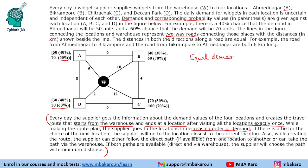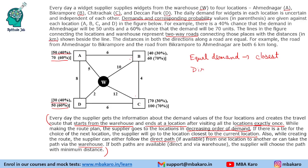In case of equal demand, the person will choose the closest location. Also, while creating the route, the supplier can either follow the direct path if available, or take the path via the warehouse. If both are available, the person will choose the shortest path. For example, if you cannot go from B to D directly, you will take the warehouse path. If both direct and via-warehouse paths are available, the shortest one is chosen.